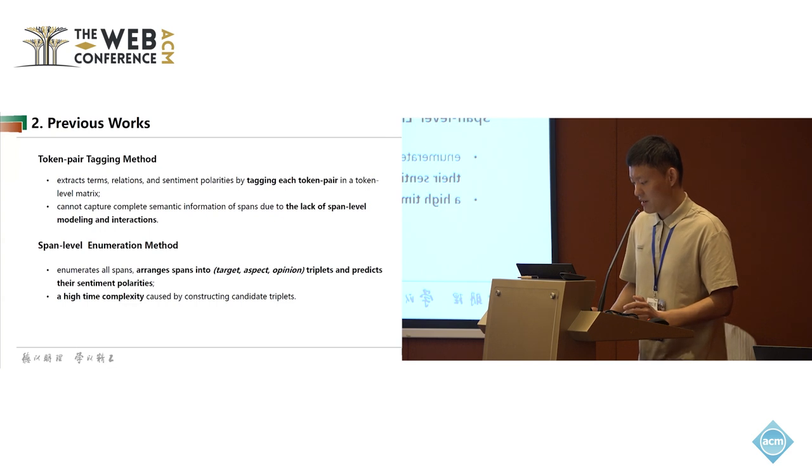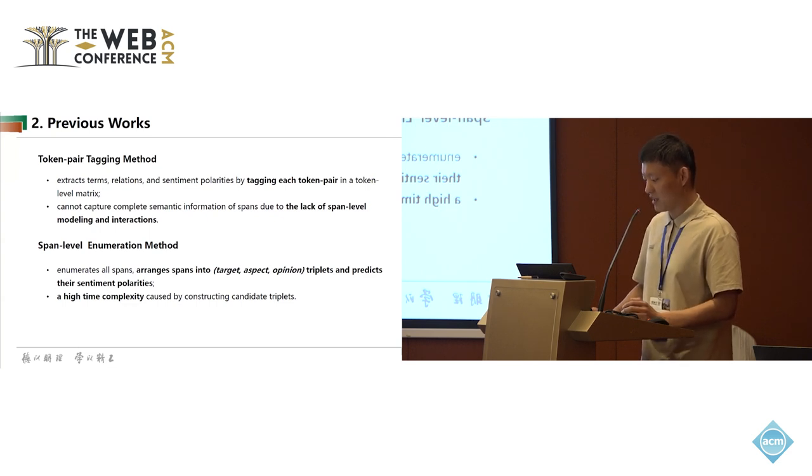The latter enumerates all spans, arranges spans into target, aspect, opinion triplets, and predicts their sentiment polarities. However, they have high time complexity caused by constructing candidate triplets. For example, there are 100 spans, then there will be 1 million triplets.